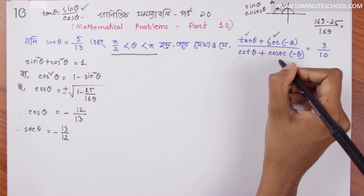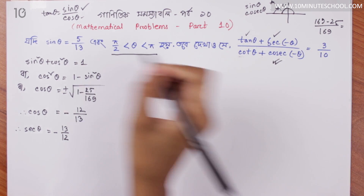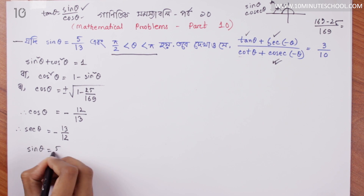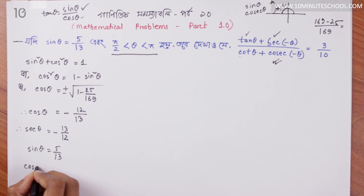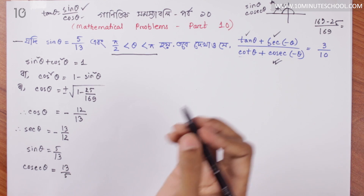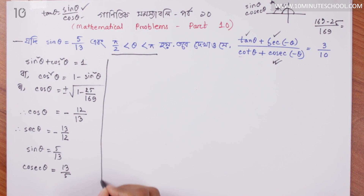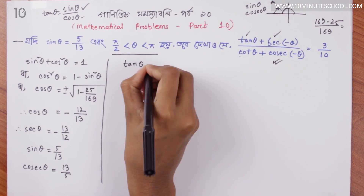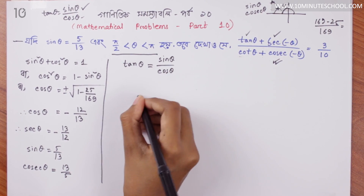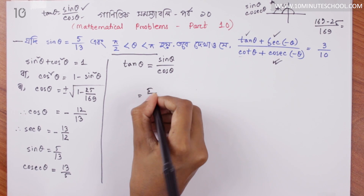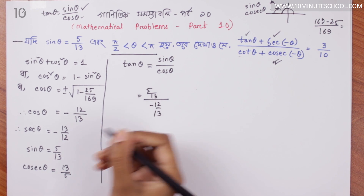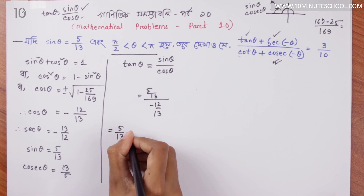Now look here — if sin θ = 5/13, what is cos θ? If sin θ is 5/13, then cosec θ = 13/5. For tan θ, we use tan θ = sin θ / cos θ = (5/13) / (−12/13).